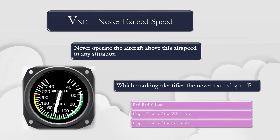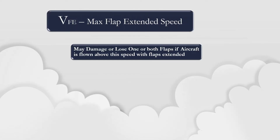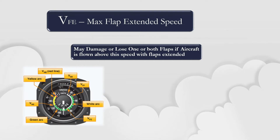Below is a practice exam question a student pilot may see on the private pilot written exam in regards to the VNE speed. The maximum flap extended speed is the VFE speed. A pilot could lose one or both flaps if the aircraft is flown above the VFE speed with the flaps extended. The VFE speed is indicated by the upper limit of the white arc, as indicated in the diagram of the airspeed indicator.